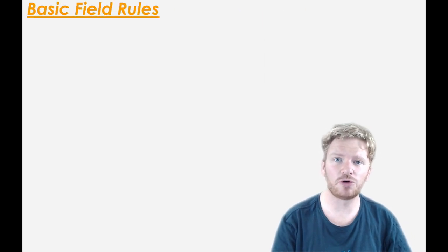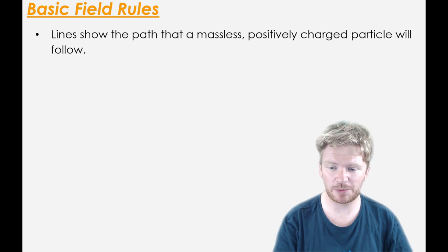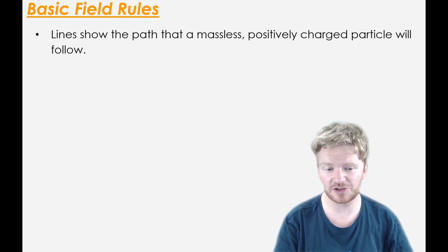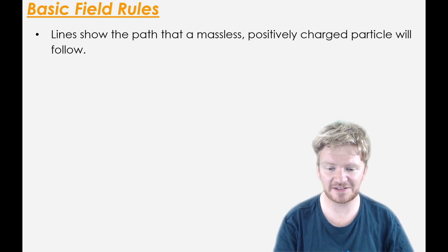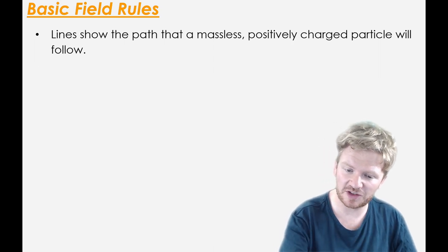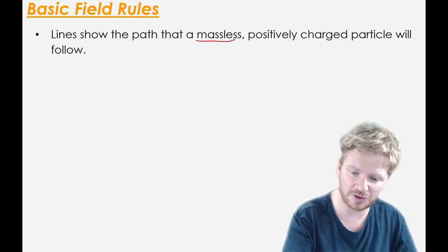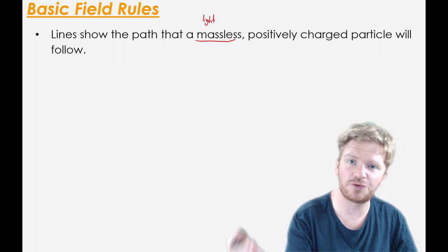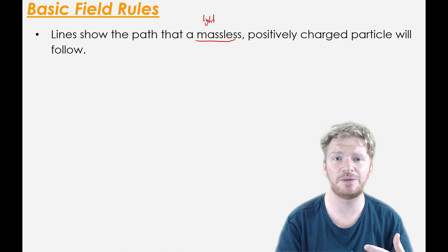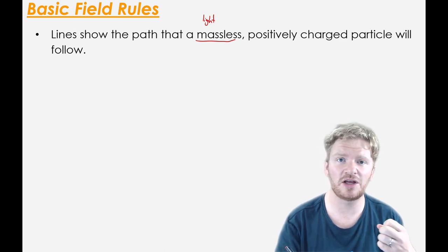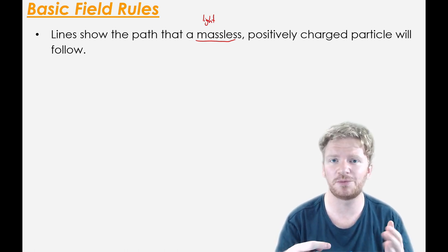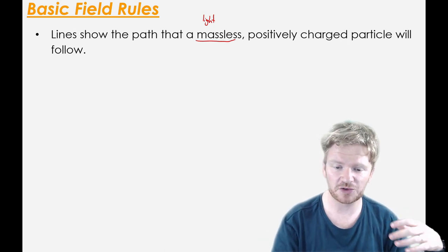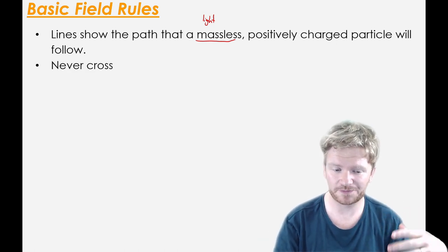So just a quick recap on drawing electric fields. We have a couple of rules that we need to adhere to every time. The first is that field lines need to show the path that a massless, positively charged particle would follow. It's important that the particles are massless, because that means they're very light, so they will actually follow that path. If you imagine a heavy particle, it could require extra force to make it travel the true path.